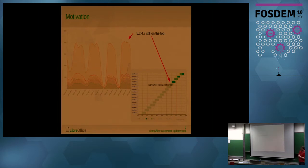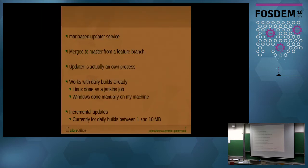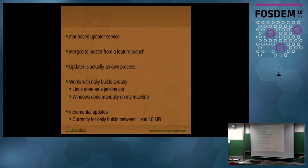I will quickly talk about the different components of the automatic updater and then talk about which components are not working — the main focus will be on the not-working parts. So how does the updater actually work? We are reusing the Mozilla code. It's called a MAR-based updater because the file format they use for the update files is MAR files. I have merged the code to master about half a year ago, and you can enable it with --enable-online-update=MAR.